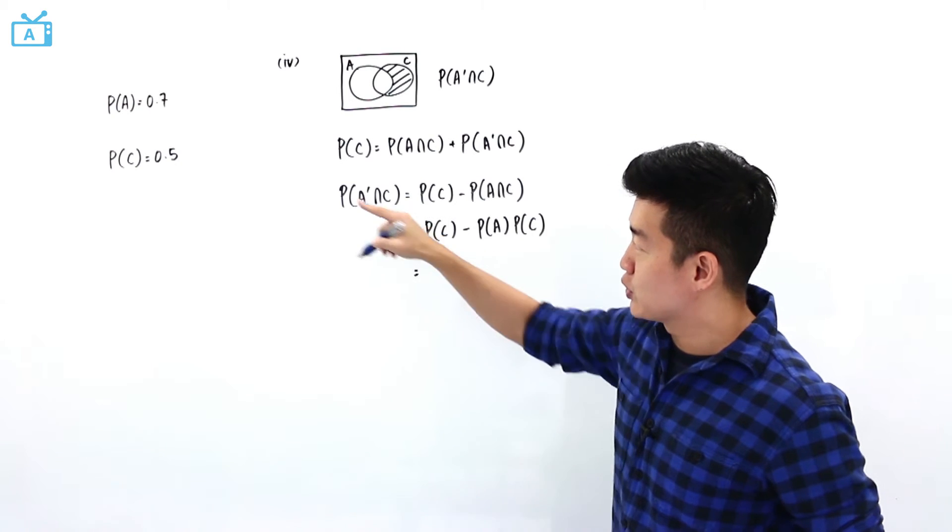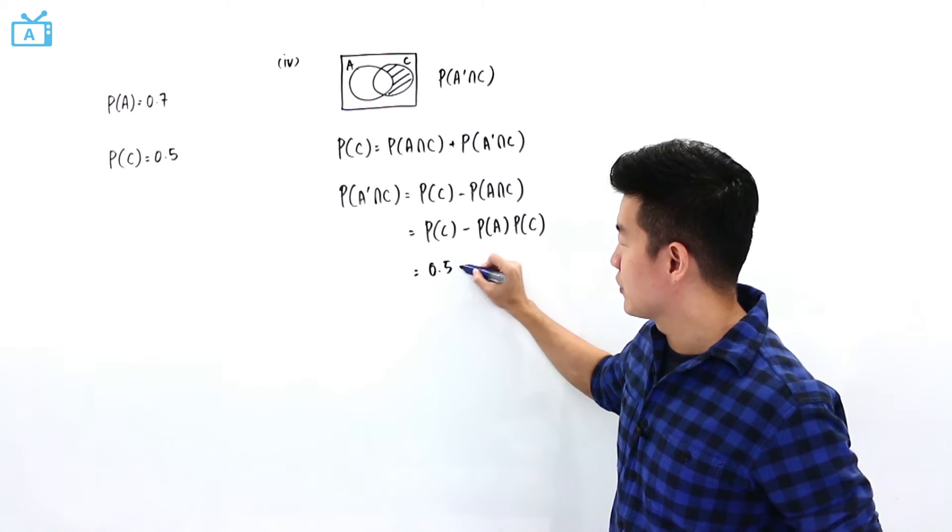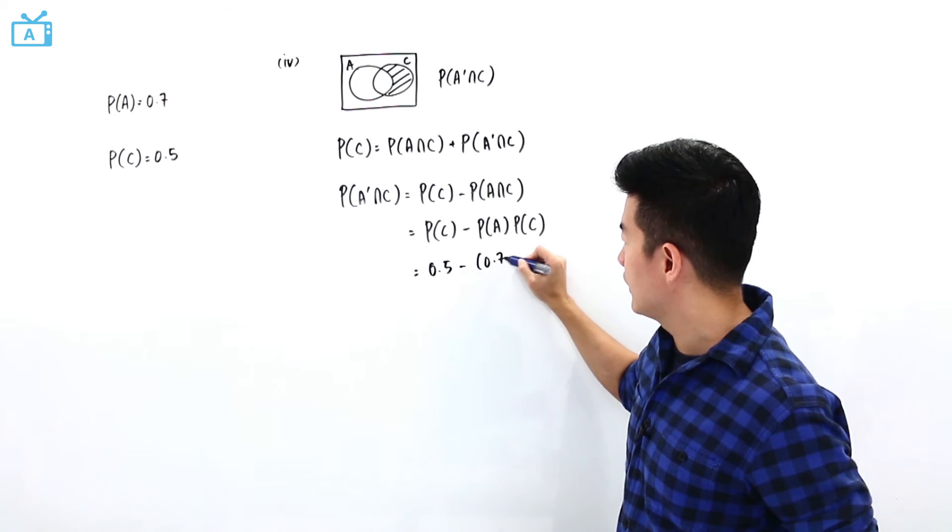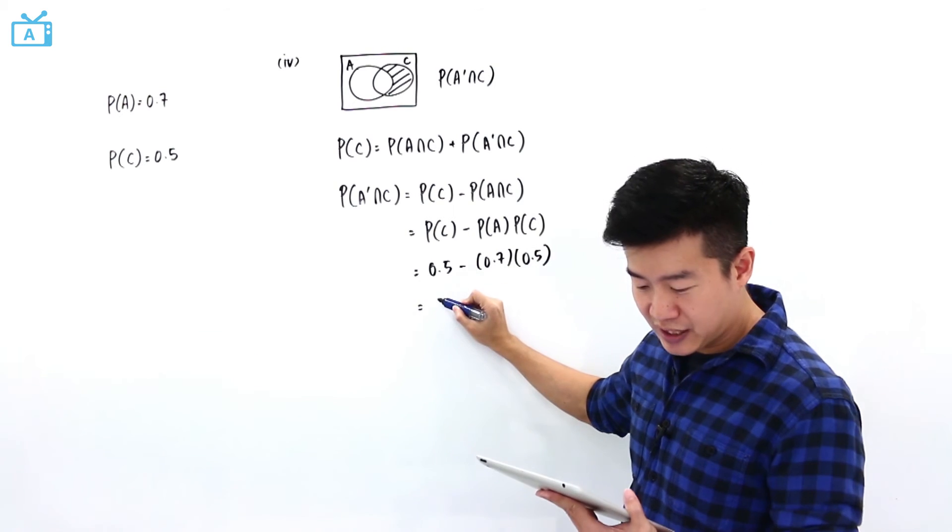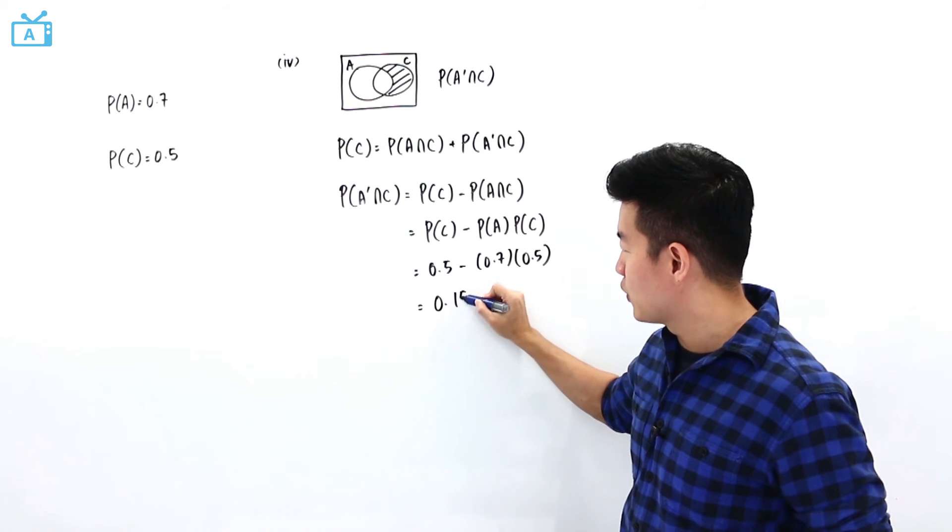So this is going to be equal to probability of C is 0.5 minus probability of A times the probability of C. And this is going to get me an answer of 0.15.